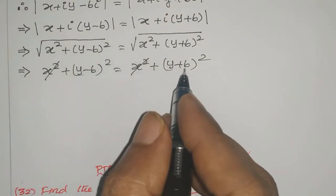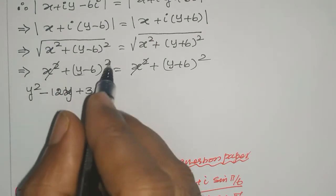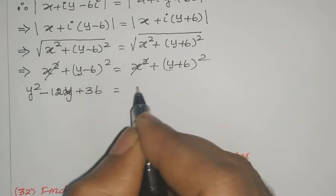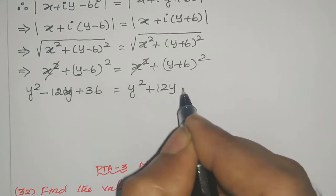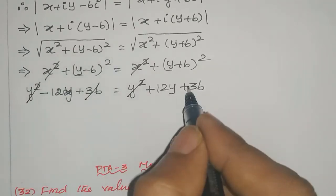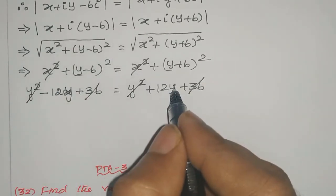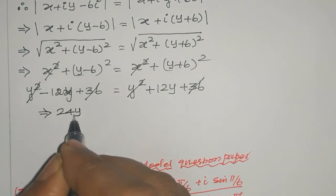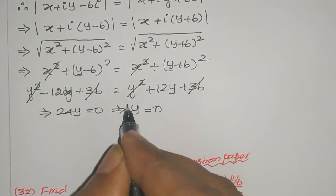Using a minus b whole square and a plus b whole square, expand both sides. Left side: y squared minus 12y plus 36. Right side: y squared plus 12y plus 36. The y squared terms cancel and the 36 terms cancel, leaving minus 12y equal to 12y, so 24y equal to 0, which implies y equal to 0.